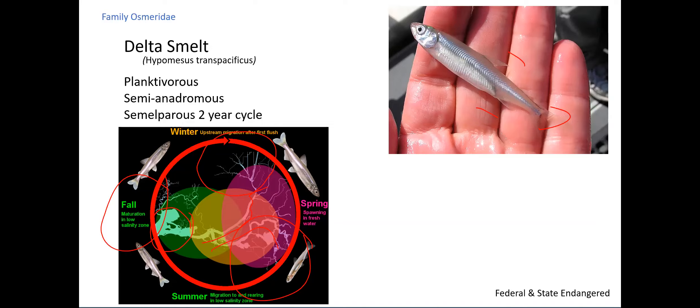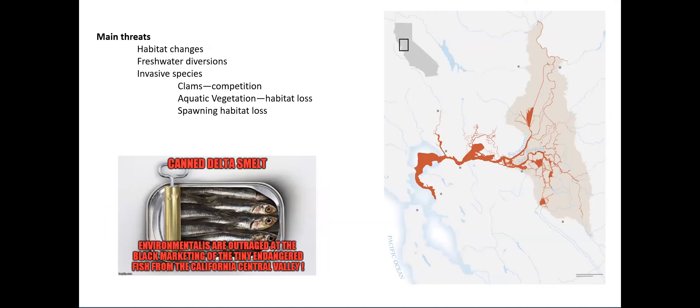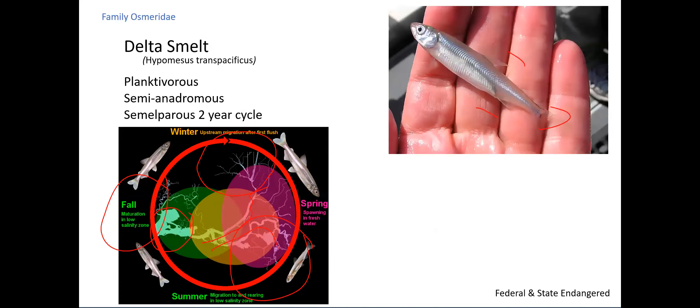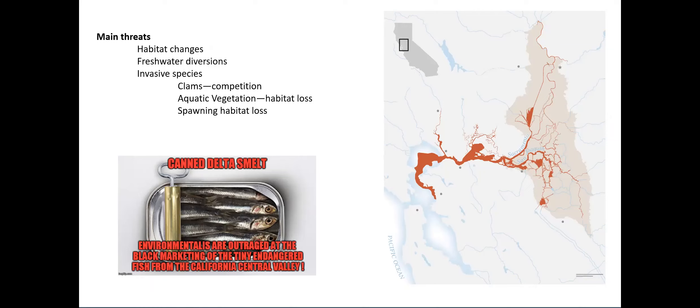The eggs hatch on their own, the adults mostly die or return downriver, and then in late spring the juveniles move downstream. They hold through summer and fall going through metamorphosis from larvae to juvenile stages and eventually into adults, and the process repeats. Main threats include habitat changes fundamentally altering the whole estuary, fresh water diversions moving water out of the system in unusual ways, and invasive species — particularly clams — which compete for food.